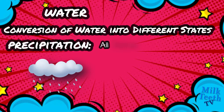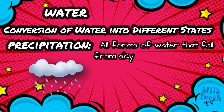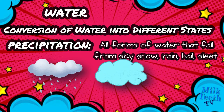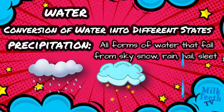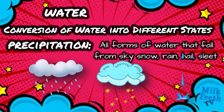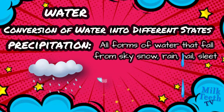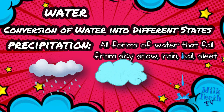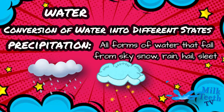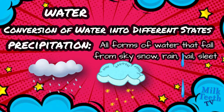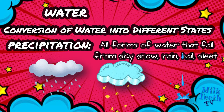Precipitation: all forms of water that fall from the sky — such as snow, rain, hail and sleet — are called precipitation.